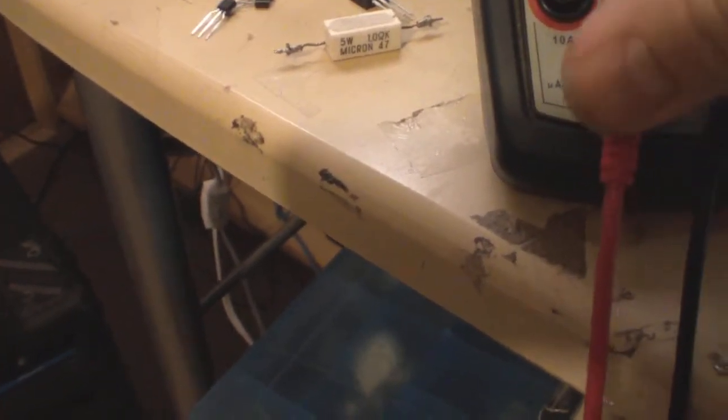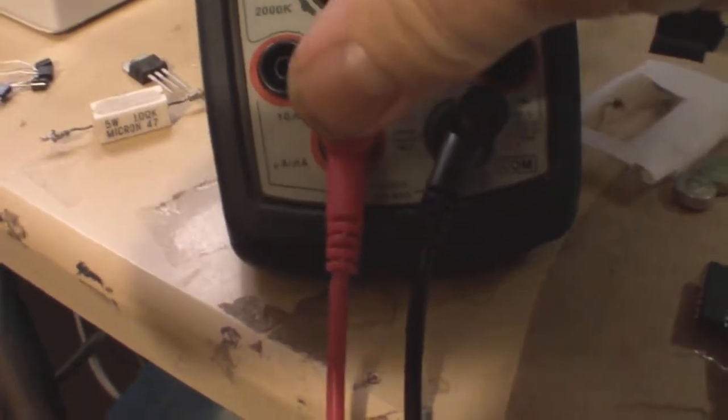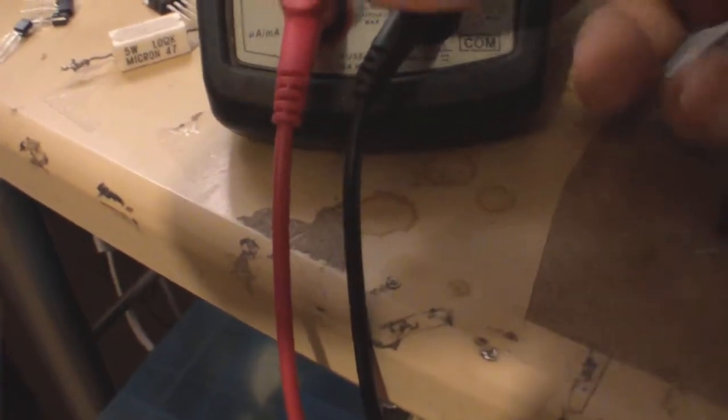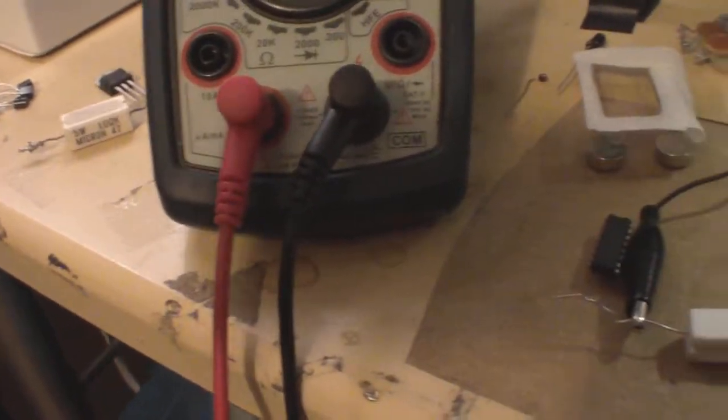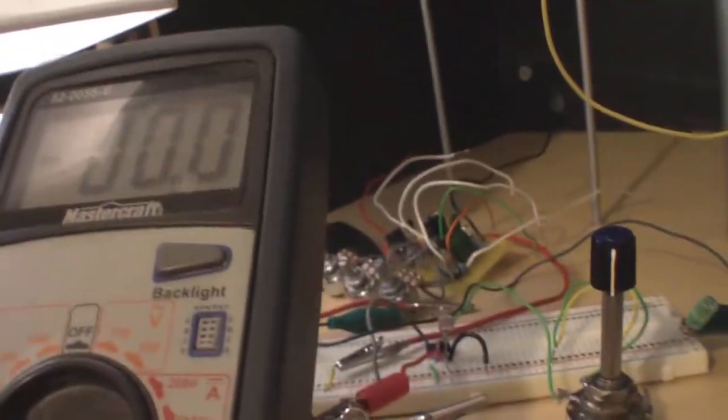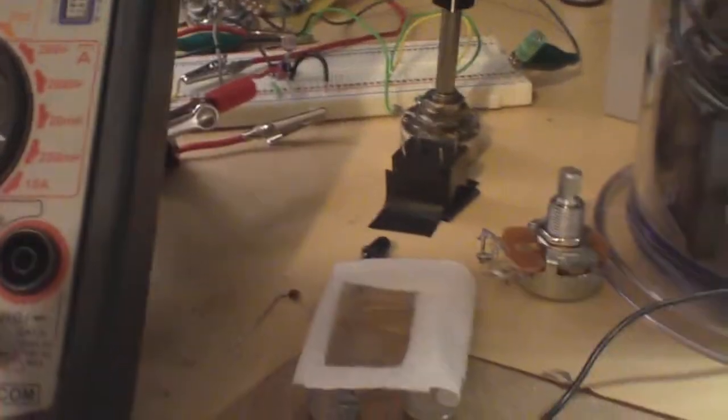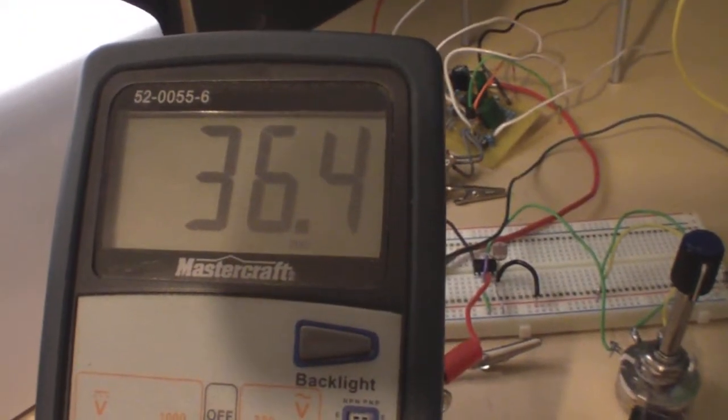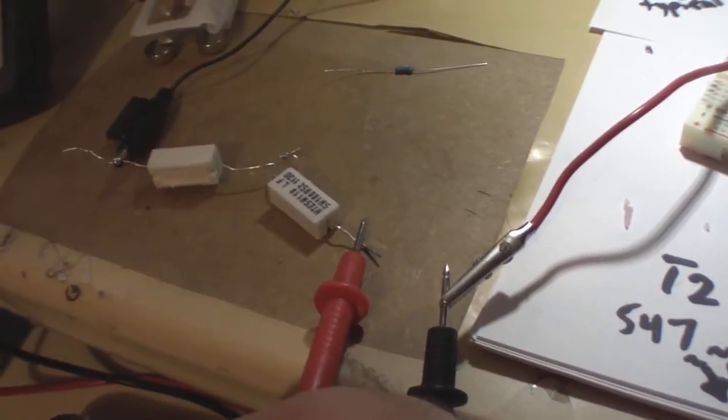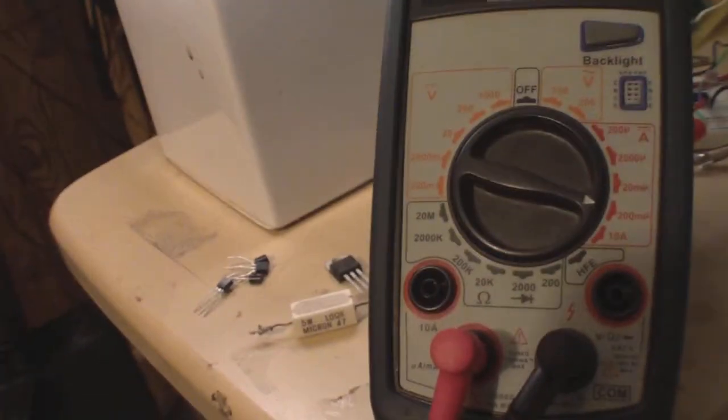When I change the meter over here to like an ammeter and I go in the 200 milliamp scale, and then I supply it with some current here, I'm getting a draw of around 36 milliamps, 36 milliamps input. Okay so nothing's crazy or nothing.